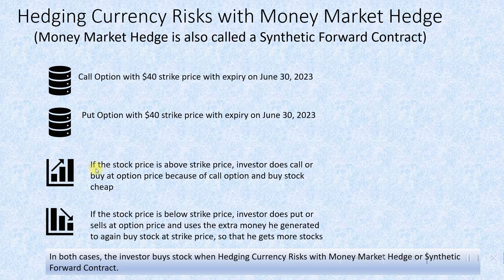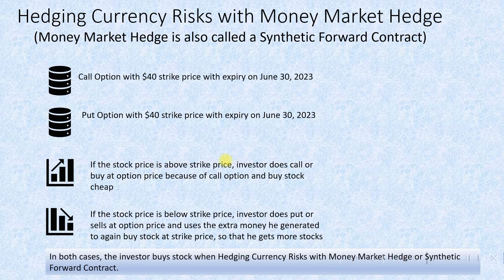One thing that can happen is the stock price goes above the strike price. In this case, the investor exercises the call option and buys the stock at the strike price — getting it cheap. Since the stock price is above the strike price, the investor can acquire it at $40 through the call option.